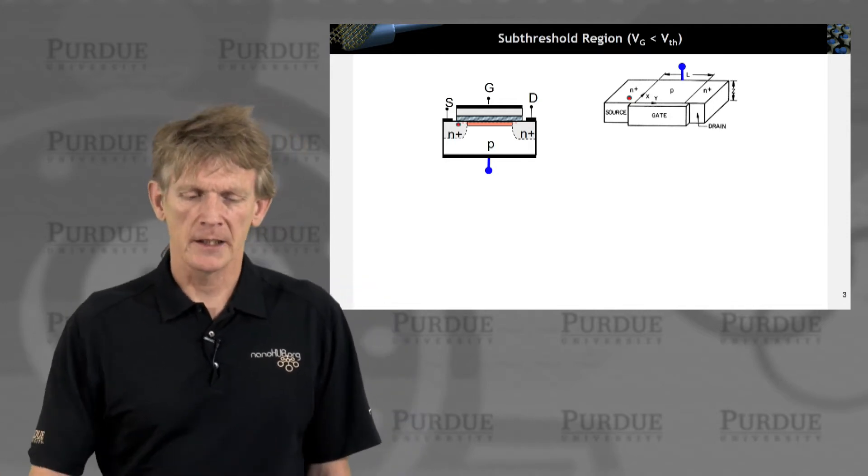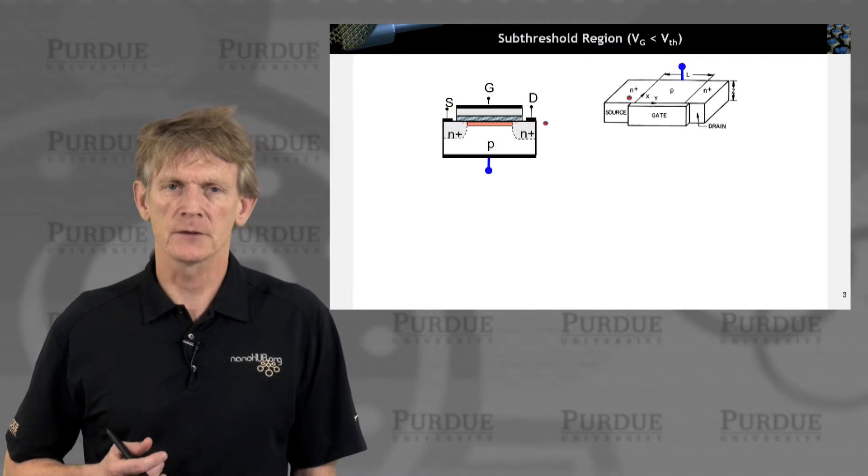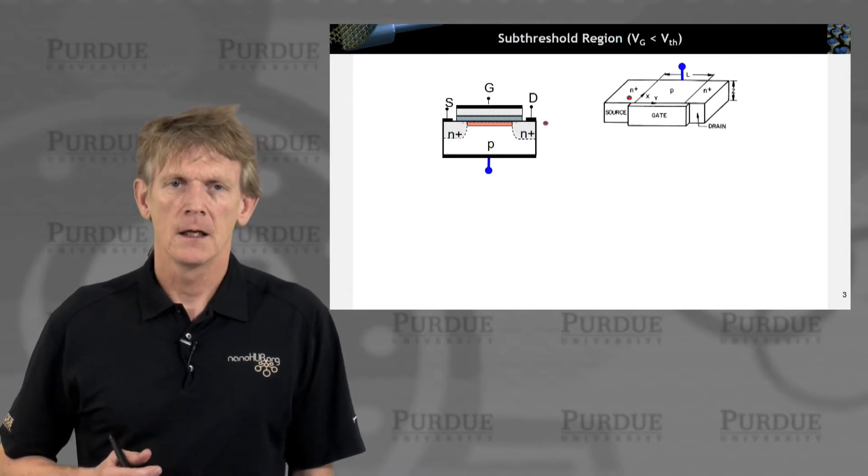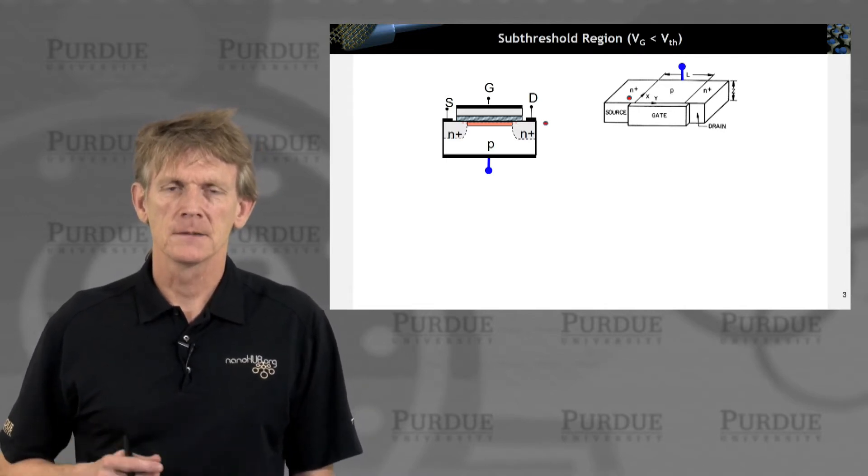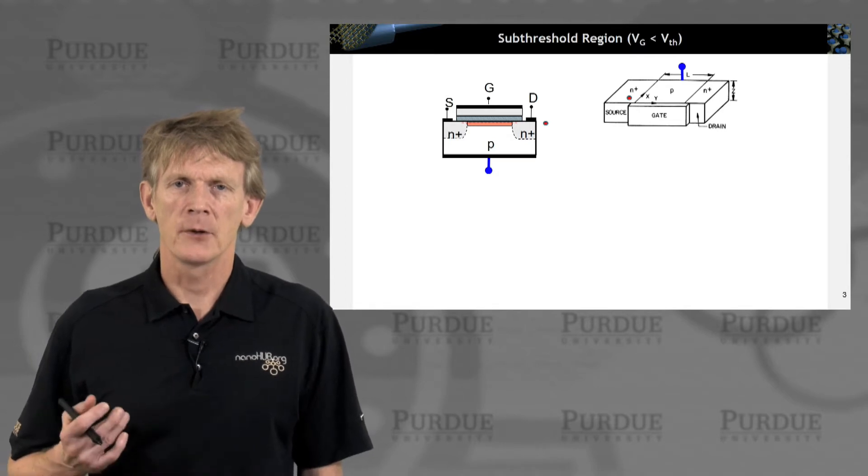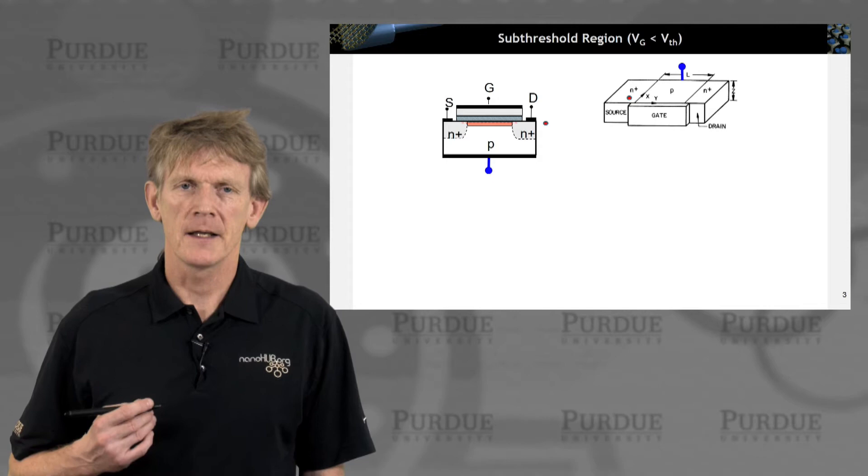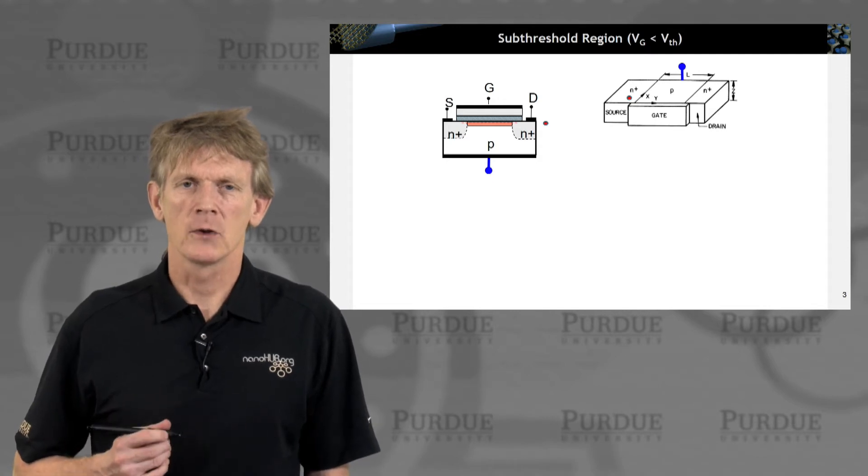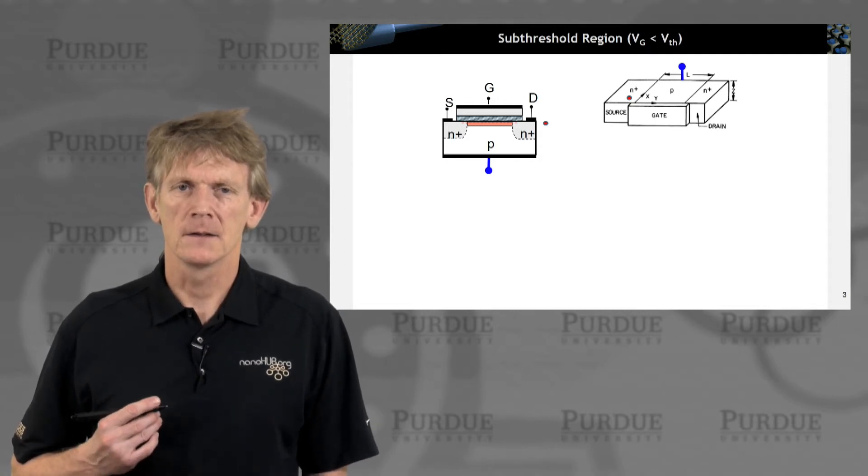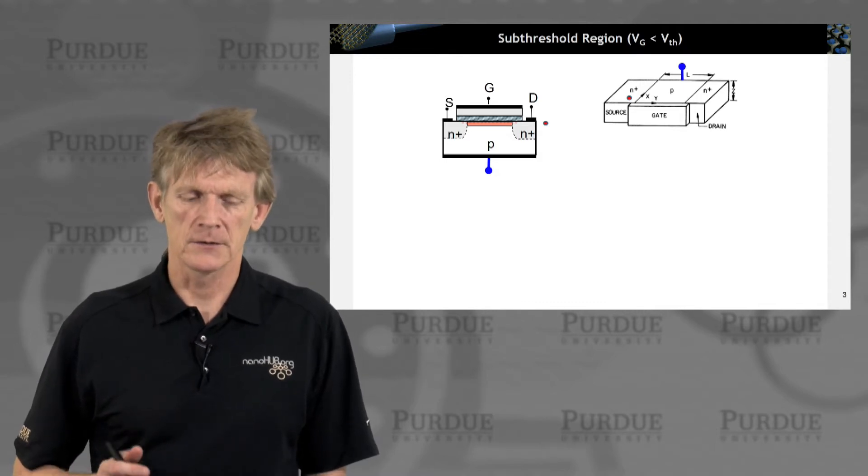Alright, so what can happen is you can have a few electrons flow under the gate, but we're operating it sub-threshold, so by natural generation there will not be a significant amount of minority carriers.